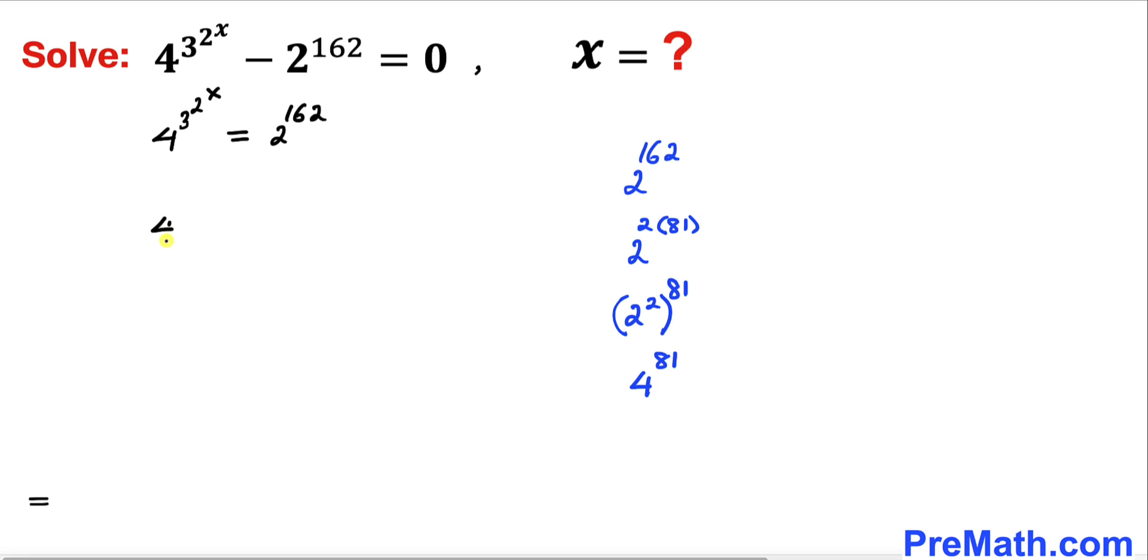We can write this as 4^(3^(2^x)) = 4^81. Now we can see that our bases of 4 are the same on both sides. Therefore we can equate their exponents: 3^(2^x) = 81.